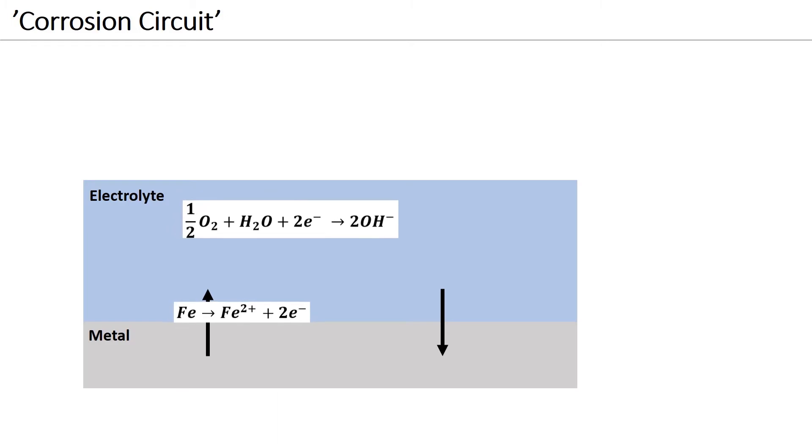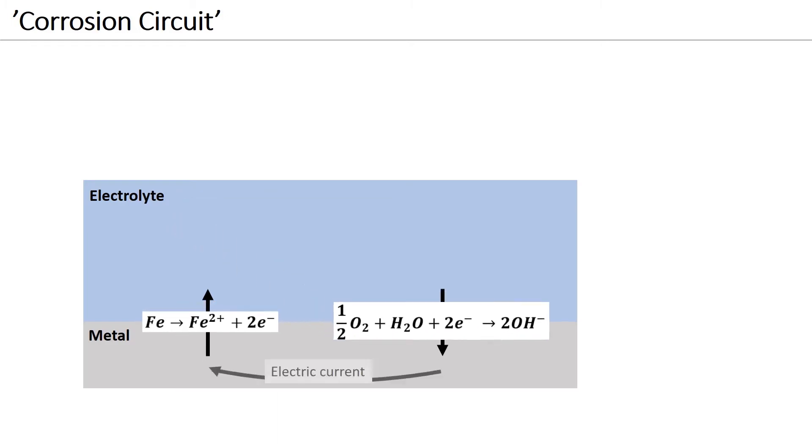The corrosion circuit is closed by an electric current which flows in the metal, and an ionic current which flows in the electrolyte. Thus, the corrosion process can be divided into four sub-processes: the anodic reaction, the cathodic reaction, the current of electrons in the metal, and the current of ions in solutions.